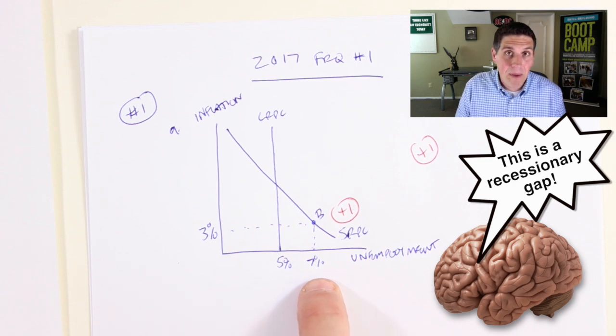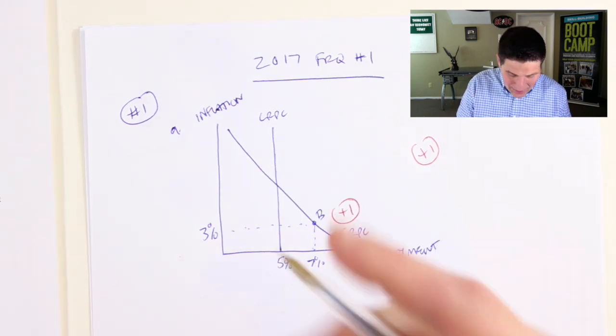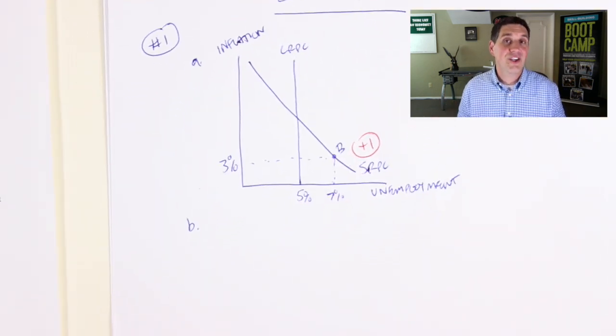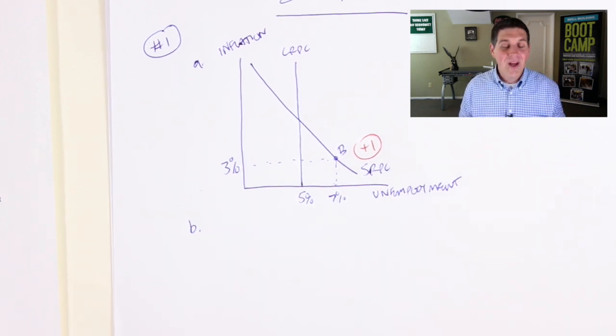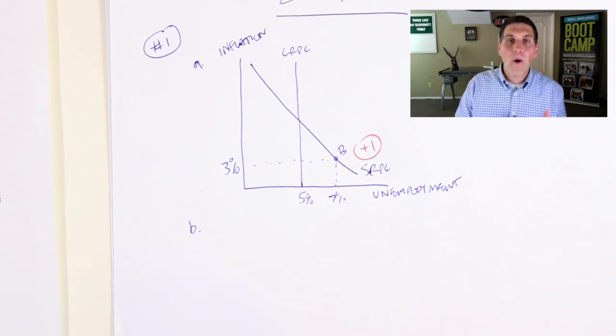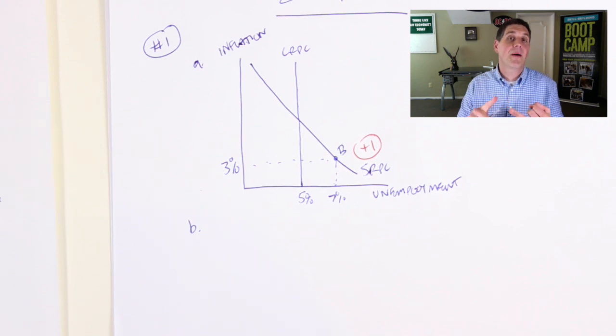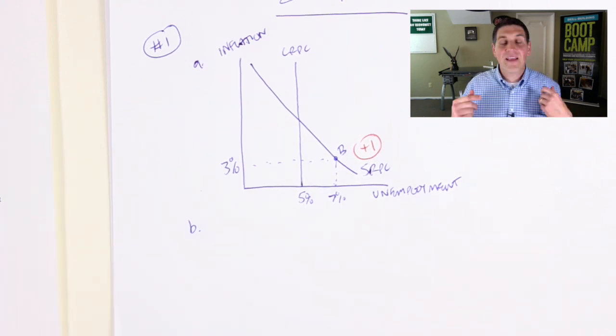7% unemployment is higher than the natural rate of unemployment of 5%. And now in B, it starts talking about some sort of policy to change the situation that we're in. Now, if you've seen AP test questions before, you know what they do. They usually say, okay, what type of fiscal policy can solve this problem? What kind of monetary policy can solve this problem or what happens if they do no policy? And that's what they do in B. They say there's no policy. What happens if the government does nothing and just waits this recession out?